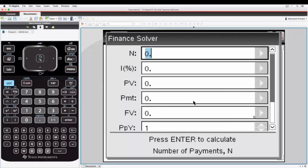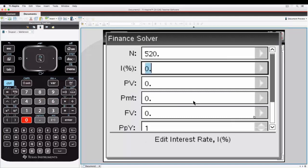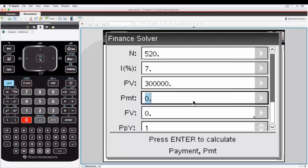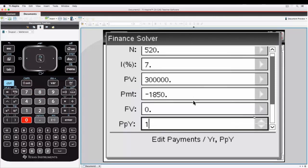So let's just make up some numbers in the finance solver. So 20 by 20 payments, an interest rate of 7 percent, a loan of 300,000, a payment of 1,850,